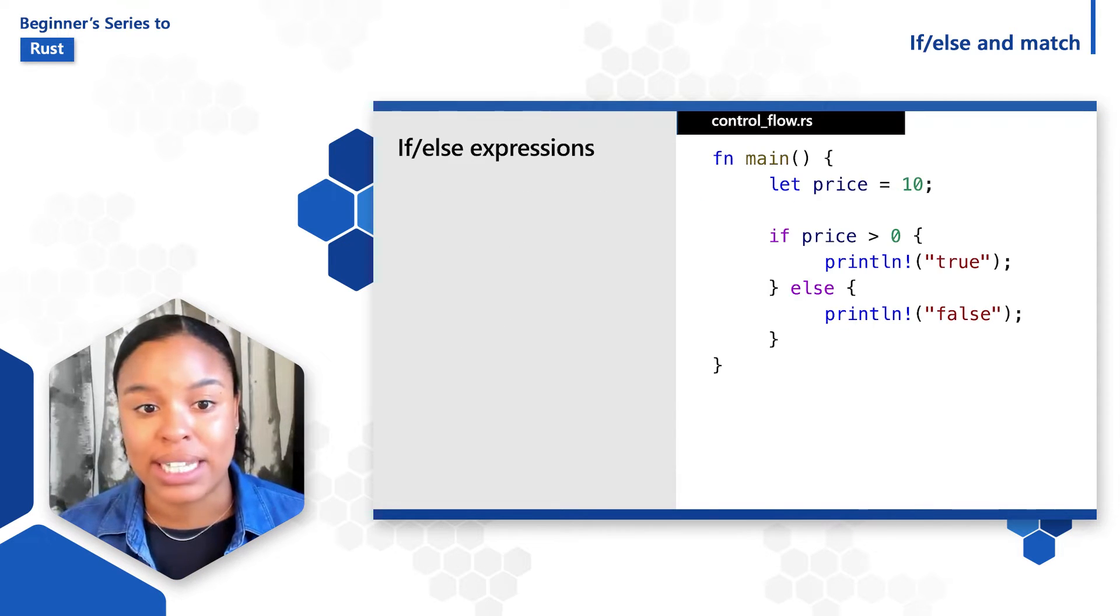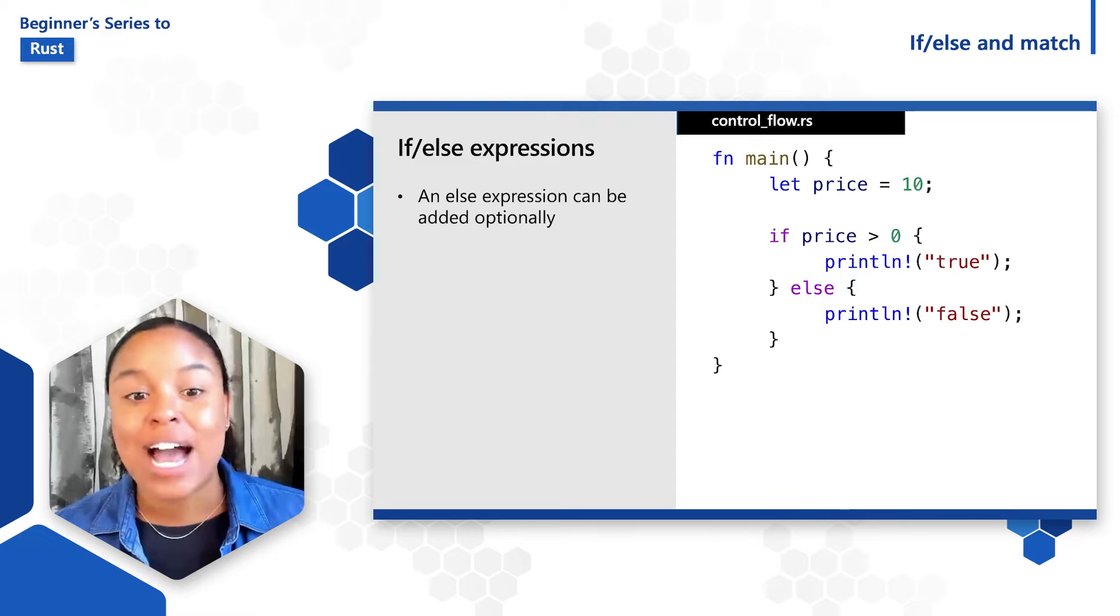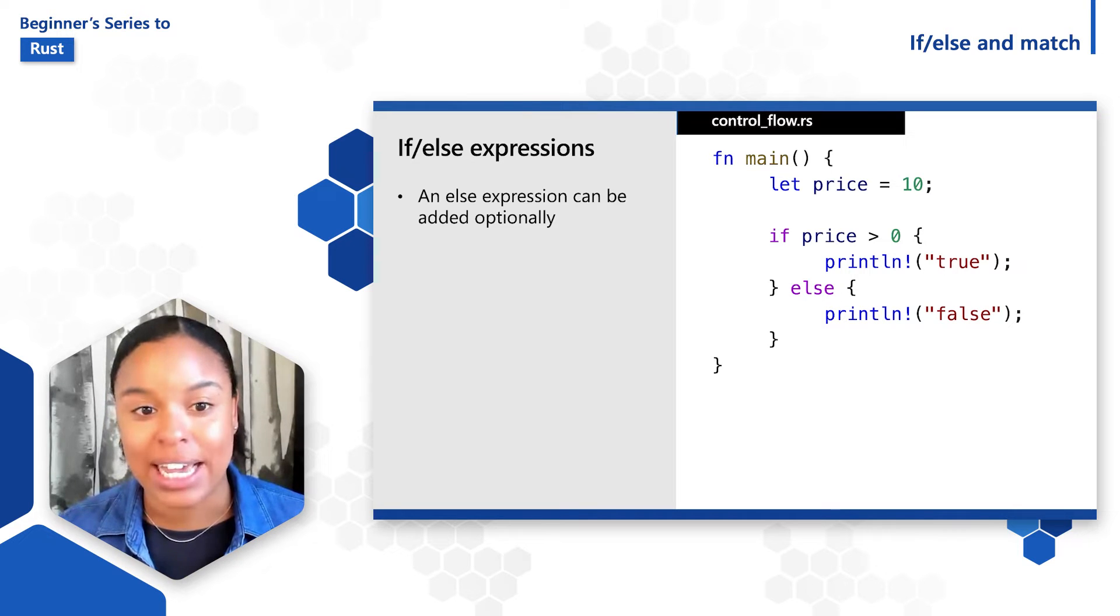Let's take a look at another example adding in an else expression after the if. So here we're saying if price is greater than zero, then print out condition is true, else print out condition is false. An else expression can be added optionally to be explicit about the alternative block of code to execute.